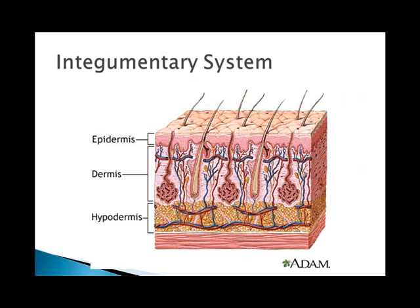Let's talk about the integumentary system — starting from the outside and working our way inside. The integumentary system is basically the outer covering of any animal body, called the integument. In some invertebrates it was called a cuticle. In vertebrates, the integument consists of skin and structures derived from epidermal cells like scales, feathers, hair, beaks, horns, and nails, with an outer epidermis and underlying dermis.